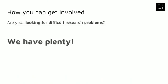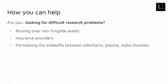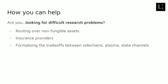If you're someone who's just looking for difficult research problems — really interesting research problems — we have plenty of them. This is just a small selection. We have really interesting research problems about routing over non-fungible assets, kind of like building a channel with someone where you don't have a direct connection with them but going through intermediaries. We have research problems into insurance providers, which are the third parties that watch the chain for old data on your behalf. And there's also really interesting work to be done in formalizing the trade-offs between sidechains, plasma, state channels, etc.